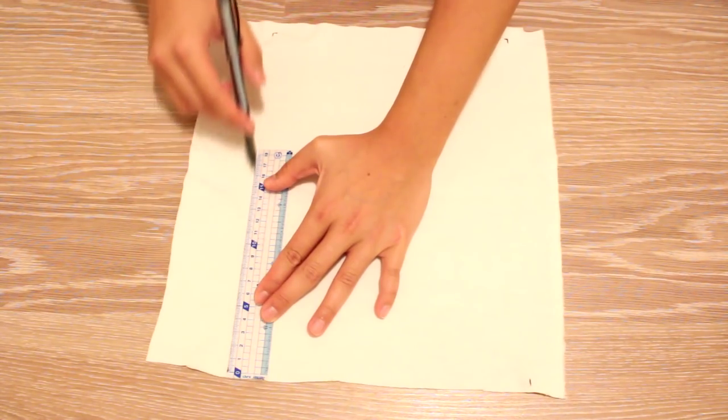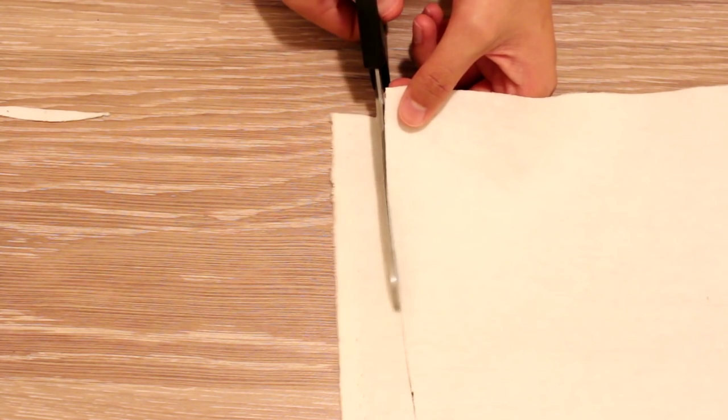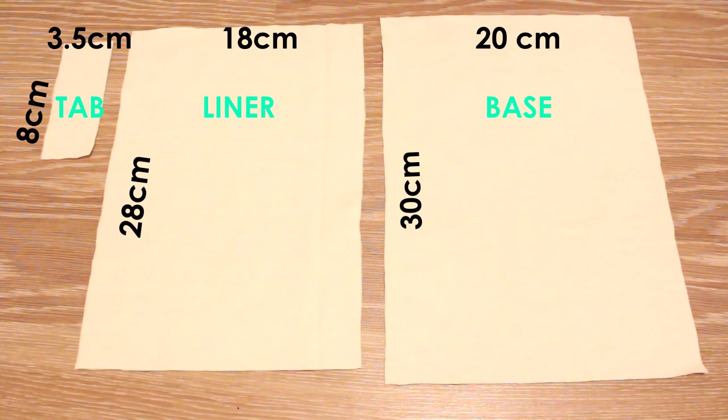Using a ruler, draw lines to connect all four points to form a rectangle. Taking your scissors again, cut out the rectangle and this will be the base size and shape of your pencil case. Now that you have your base pencil case size, you're going to need to cut out two more pieces of fabric, one for the liner and one for the side tab.